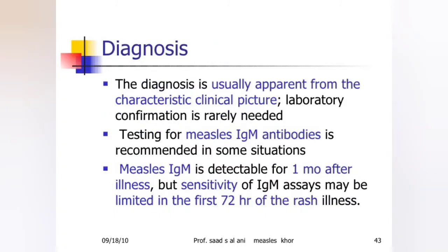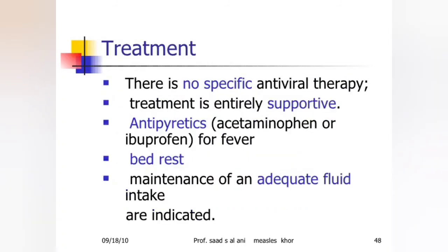Diagnosis: Diagnosis is usually apparent from the clinical picture. Testing can be done for measles IgM antibodies. Measles IgM is detectable for one month after illness, but sensitivity of IgM may be limited in the first 72 hours of rash illness.